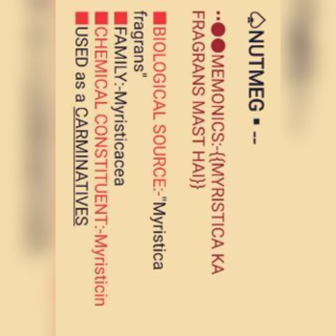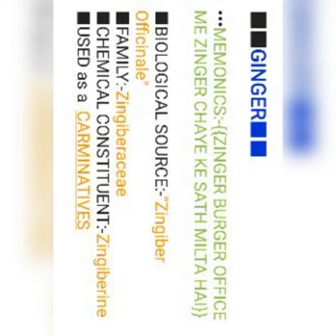Next is ginger — everybody knows this — it's a rhizome drug. Mnemonic: Zinger burger office में zinger chai के साथ मिलता है. Biological source: Zingiber officinale — zinger burger और office से. Family: Zingiberaceae. Chemical constituent is zingiberene — इसको Z cube करके भी याद कर सकते हैं. Use: carminative.